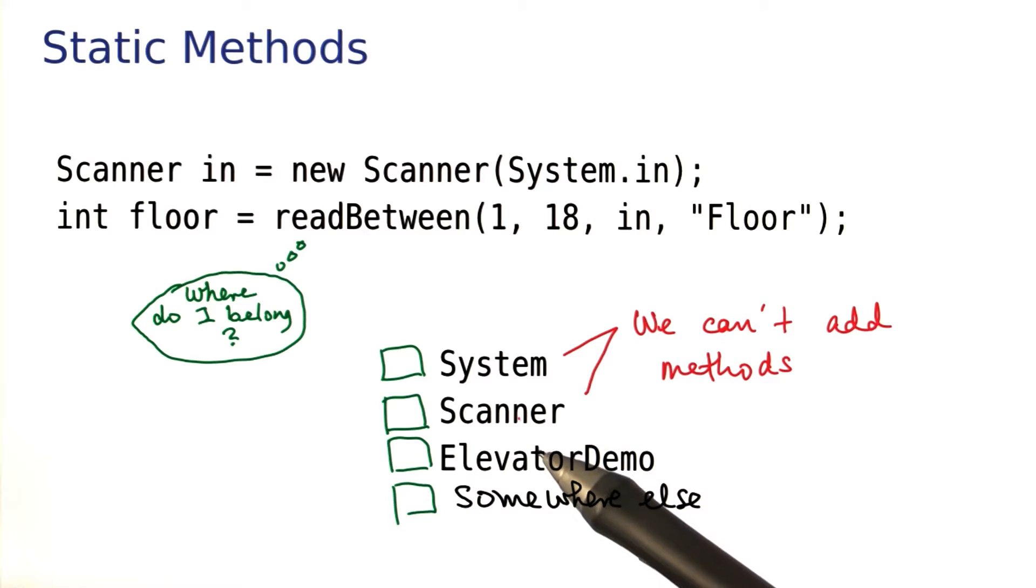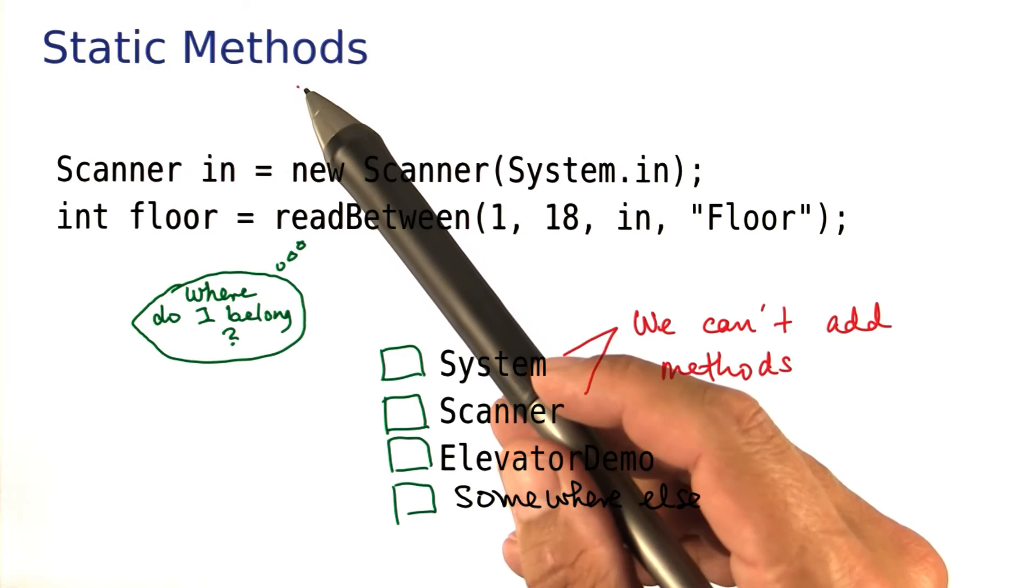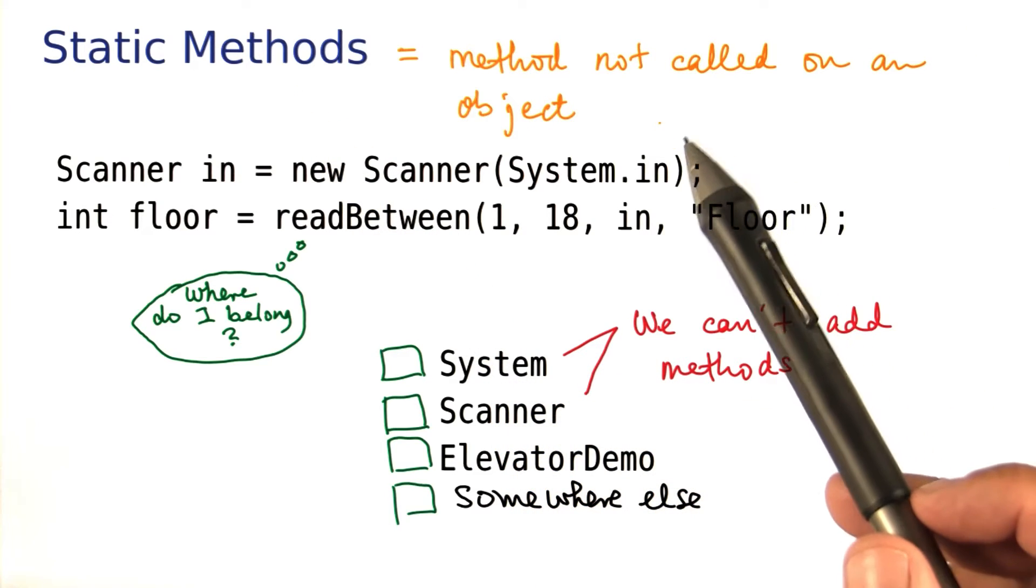Whenever you're in this kind of situation, where you have a method that can't really be called on an object, then you make a static method. A static method is a method that's not called on any object.